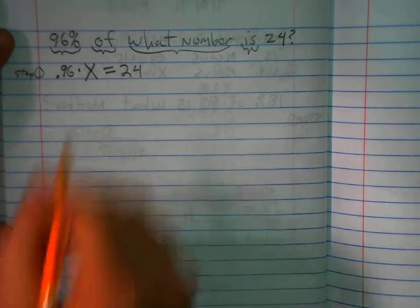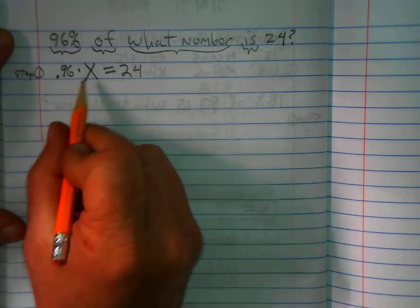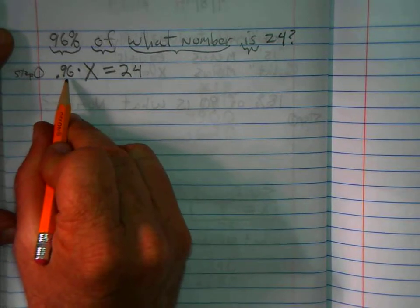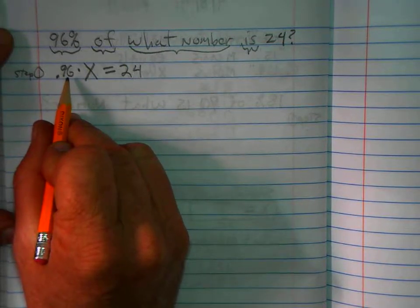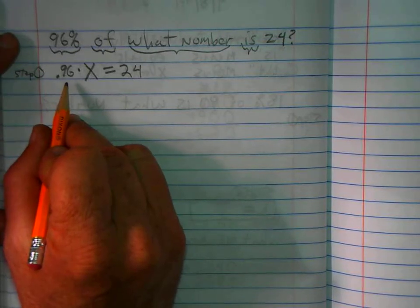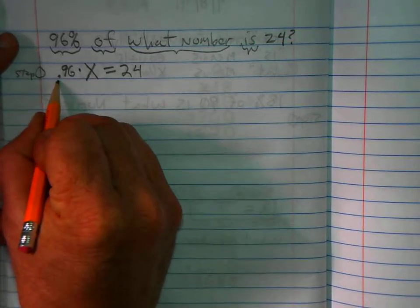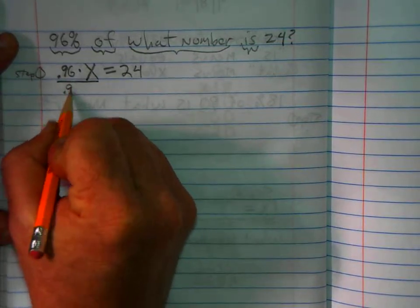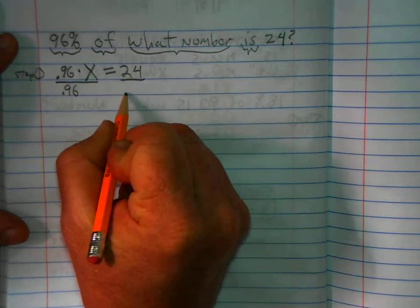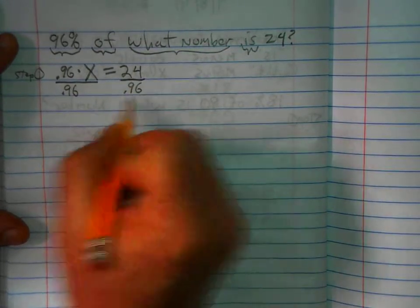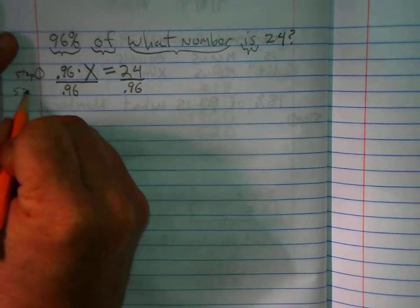Now we've got to solve for X. Since it's being multiplied by .96, we have to divide by .96 to get rid of it on both sides of the equation to keep the equality equal. So we divide the left side by .96 and the right side by .96. So this is our step two.